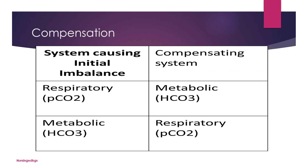When talking about acid-base disorders, compensation will always happen from the opposite system. Compensation is the body's natural mechanism to counteract an acid-base imbalance and restore a more normal pH — it's the body's way of trying to bring things back into harmony. For example, in respiratory acidosis there is an excess of carbon dioxide, so the kidneys kick in and try to retain bicarbonate to buffer the excess acid. In respiratory alkalosis, there's too little carbon dioxide, so the kidneys excrete bicarbonate to decrease alkalinity.